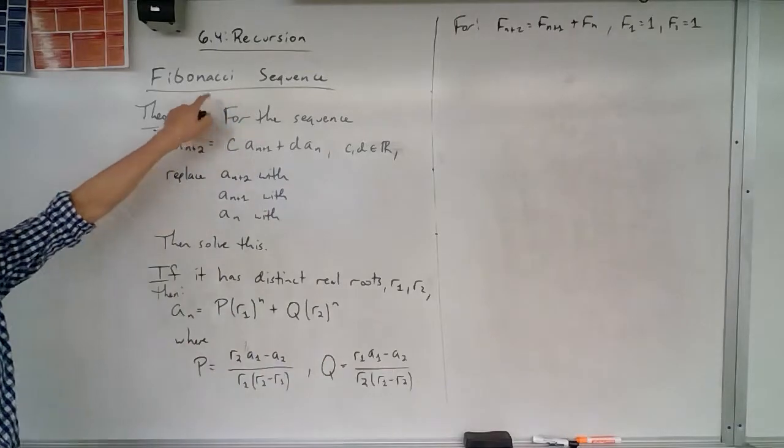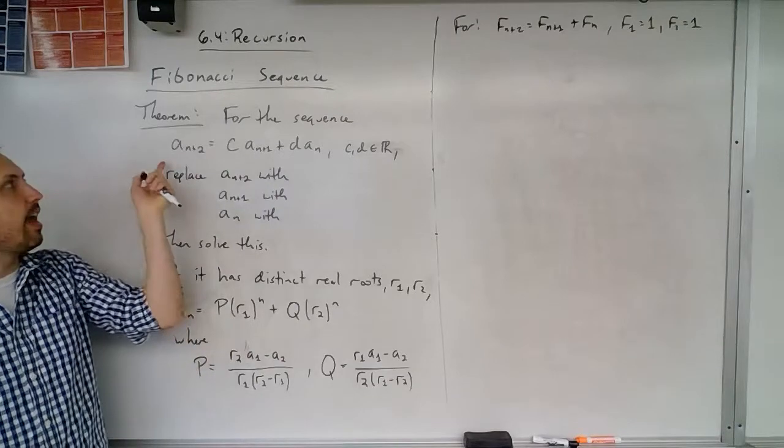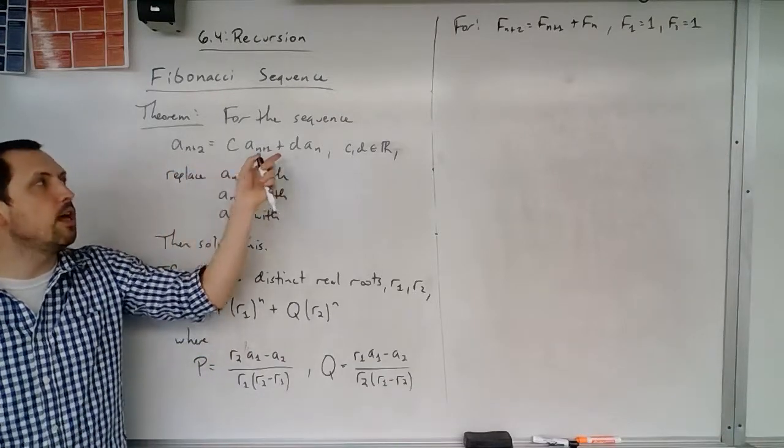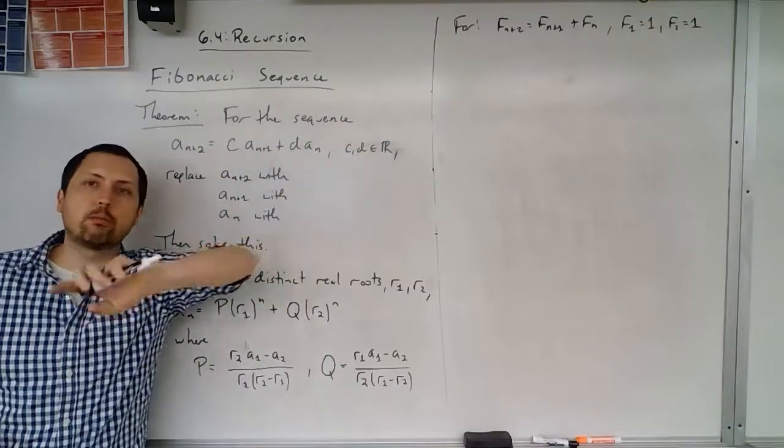So the Fibonacci sequence, for the sequence given by this, in general, if we have a sub n plus 2 equals some constant multiple of a sub n plus 1 plus some constant multiple of a sub n, these are just real numbers, some constants.